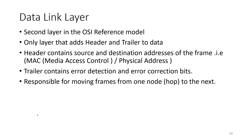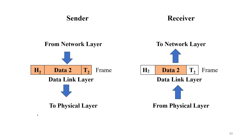The data link layer is responsible for moving frames from one node, that is one hop, to the next node — moving frames between two adjacent nodes. In this diagram you can see the sender side and the receiver side.